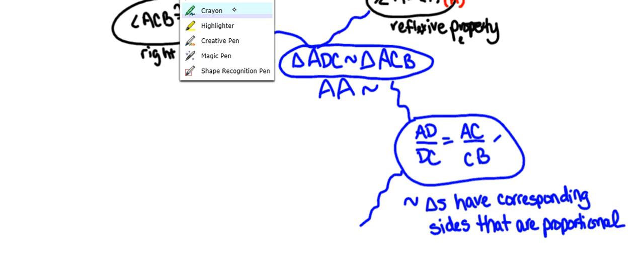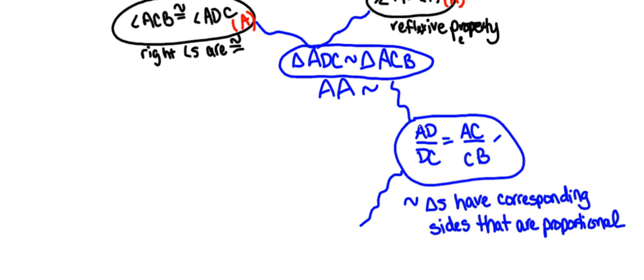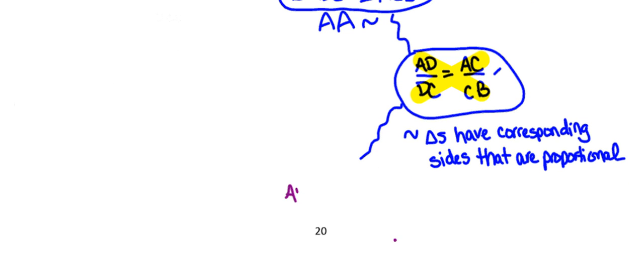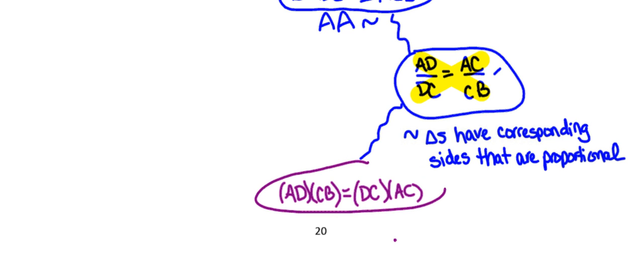Once we get to here, the second part is fairly simple. If I go ahead and cross multiply, I'm going to have the second part of what we were trying to prove: the product of AD and CB is equivalent to the product of DC and AC, using cross multiplication.